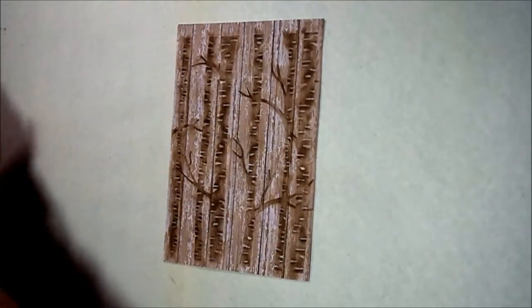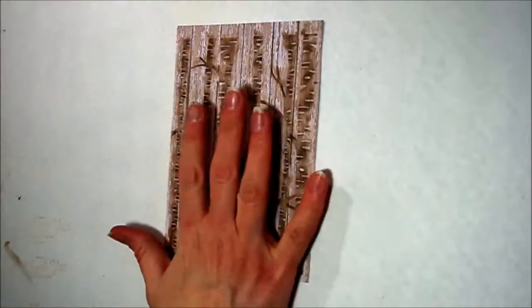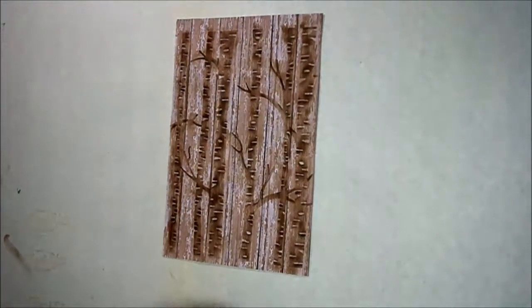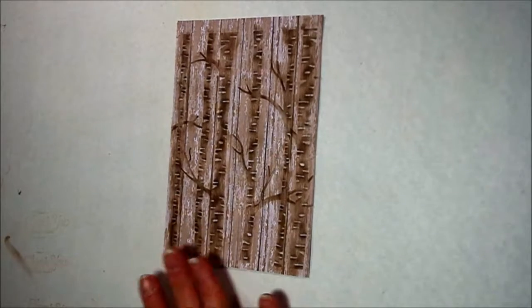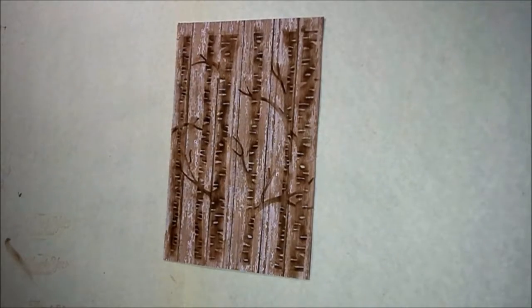Alright, there we have the background done. We have it all dry embossed and then inked up so that you can really see the definition of the trees in there. And now we're going to cut that down.